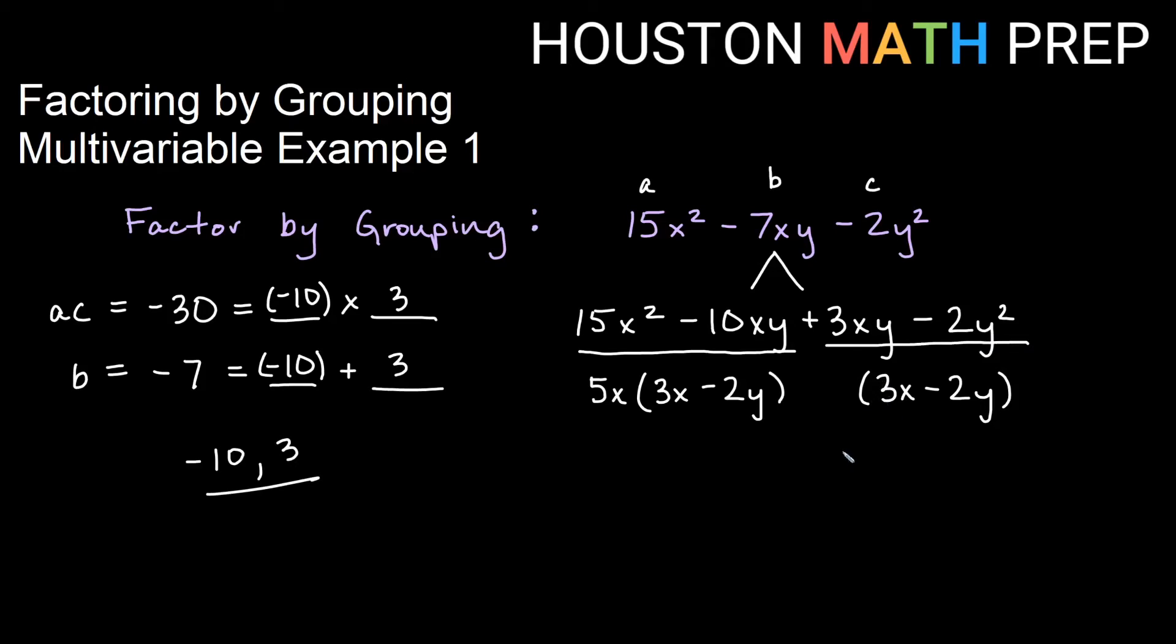Go one term at a time. If you're not sure, what times 3x would give me 3xy? Answer would be a positive y. Double check. Does positive y times negative 2y give us negative 2y squared? It does.